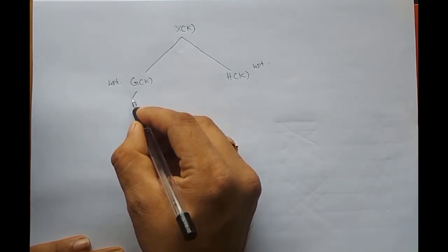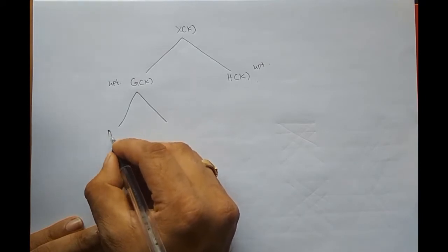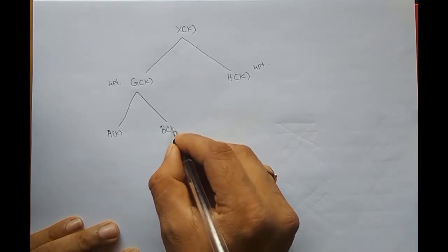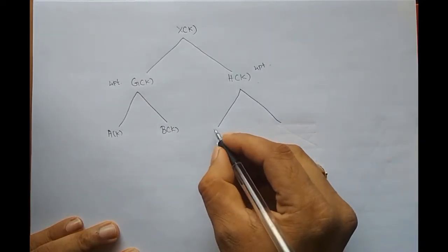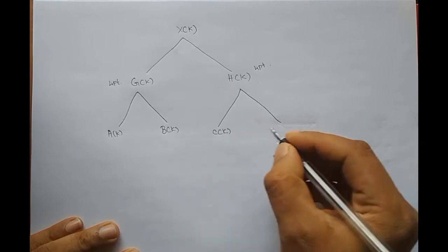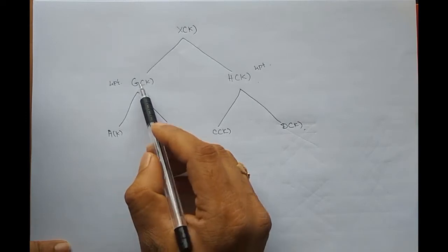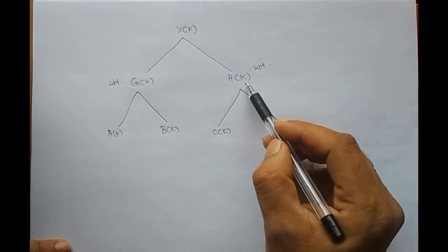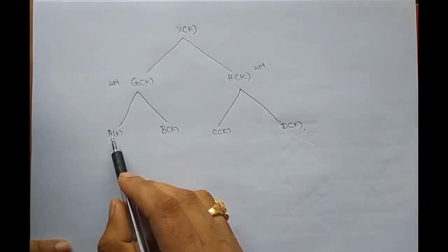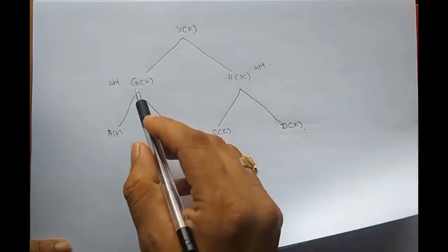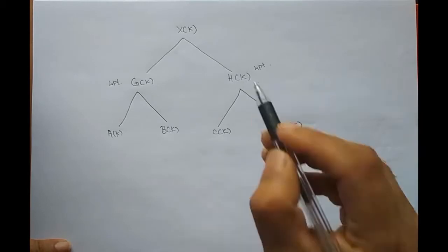And again g of k we decomposed it into 2 2-point sequences a of k and b of k. And h of k we decomposed into 2 2-point sequences c of k and d of k. Where g of k is all the even samples of x of n and h of k is DFT of all the odd samples of x of n. And again a corresponds to even samples of g, b to odd samples of g. c corresponds to even samples of h and d corresponds to odd samples of h.